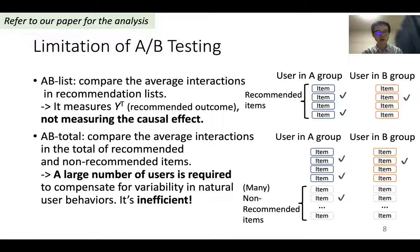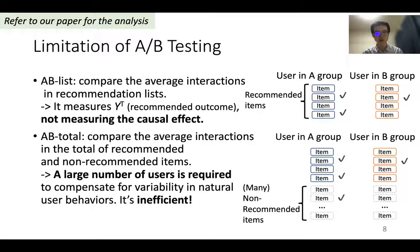There are two common settings of A-B testing. A-B list compares the average interactions in the recommendation list — it measures the recommended outcome, but not the causal effect. A-B total compares the average interactions in the total of recommended and non-recommended items. It can compare the causal effect, but it requires a large number of users, so it's inefficient.